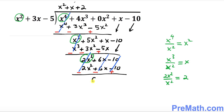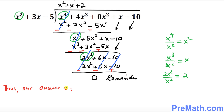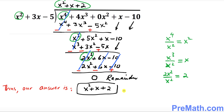We ended up with zero as a remainder. Thus our complete answer is simply — since our remainder is zero — x² + x + 2, and that is our answer. Thanks for watching and please subscribe to my channel for more exciting videos.